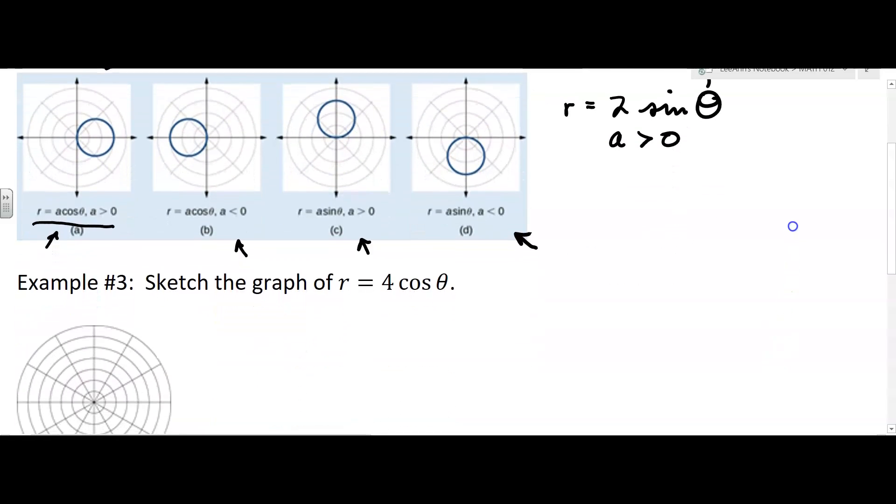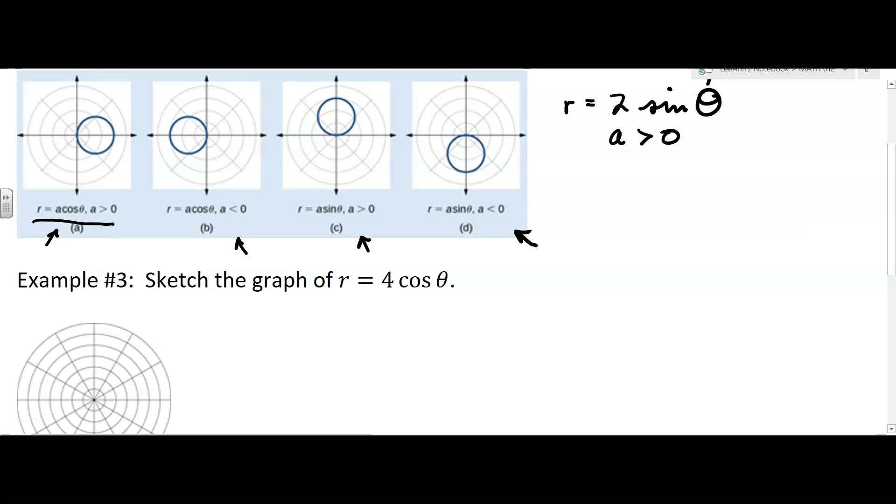So what we want to do, instead of wasting a lot of time trying to find points and ordered pairs, we're going to look for forms. So it says in example 3, sketch a graph of r equals 4 cosine theta. So we say, oh, that looks like this form right here. My a is greater than 0.